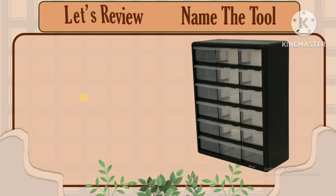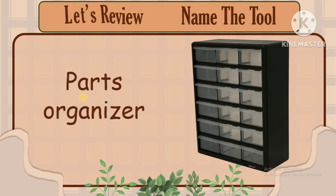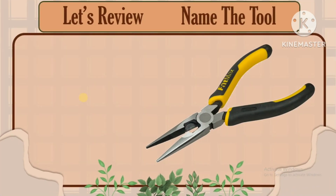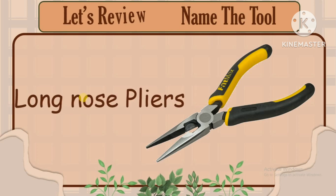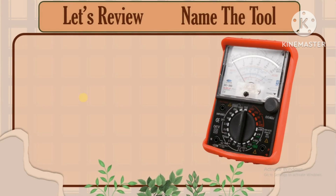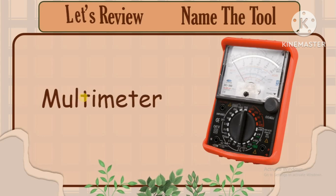You are going to name the tool or equipment. First, what is the name of this equipment? The correct answer is parts organizer. What is the name of this tool? The correct answer is long nose pliers. What is the name of this tool? It is called a multimeter.